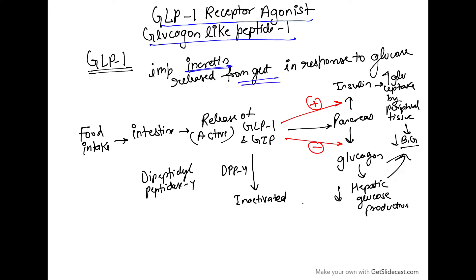Incretins are released from the gut in response to glucose. Whenever we intake food, the food goes to the intestine and in response to the food, they release incretins. Important examples of incretins are GLP-1 and GIP.